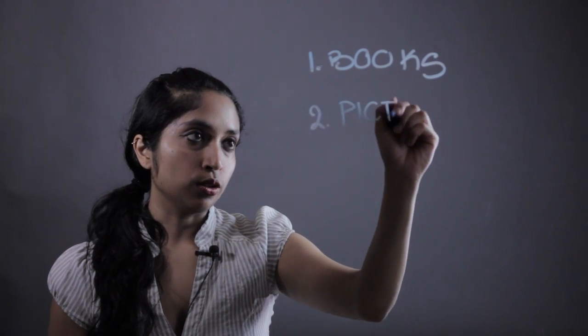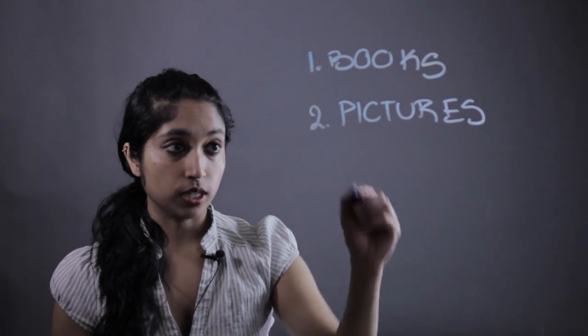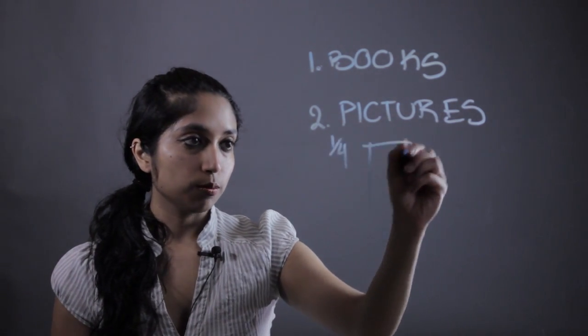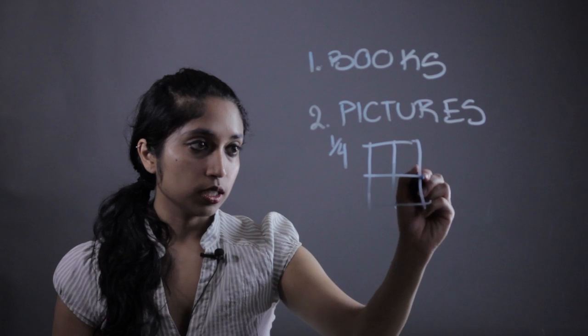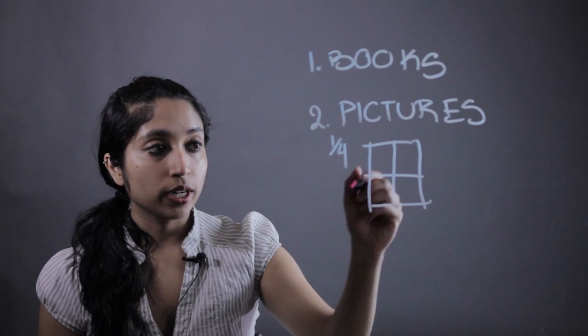So let me show you a quick example of what I mean by pictures. Say we wanted them to understand what 1 fourth means. I'm gonna take a piece of paper, divide it into four pieces, and shade 1 fourth. So that can also be written as one out of the four.